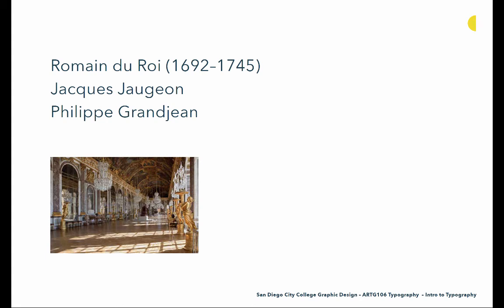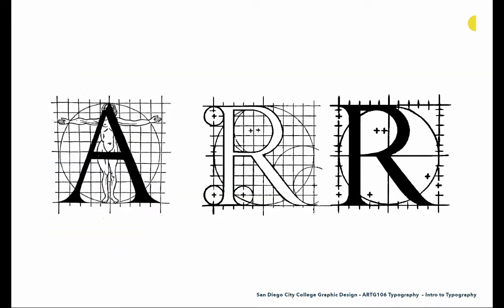Then we go to France with the Romain du Roy — a typeface commissioned by the King of France to represent royalty, which was quite a high ask. Jacques Jaugeon oversaw the project and Philippe Grandjean created much of the actual type, working from about 1692 to 1745, during the creation of Versailles. They looked at the work of Geoffrey Tory, who was rationalizing letter forms — moving away from humanist scribe-based construction toward asking how letter forms can be related to human anatomy or placed on a grid.